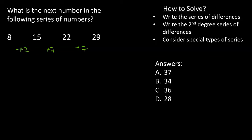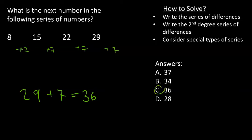Therefore, we assume that the next one should also be plus 7, and it will be 29 plus 7. That equals 36. We can find it in the answers. That's the correct answer.